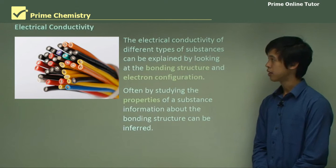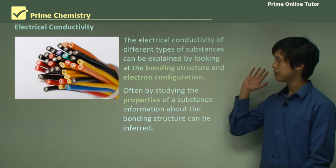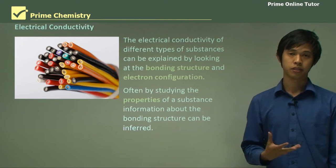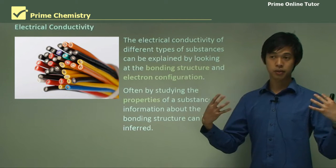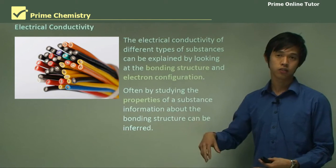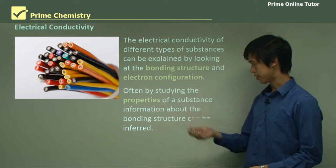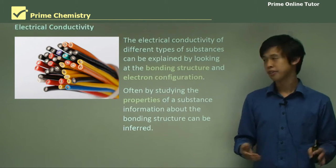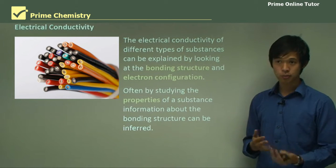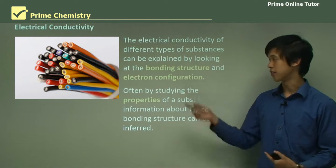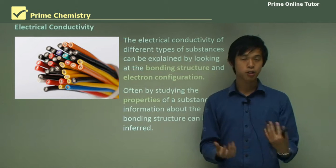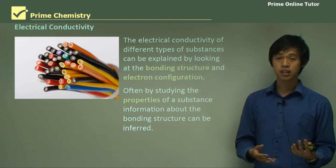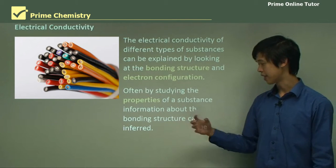So firstly, electrical conductivity. The electrical conductivity of different types of substances can be explained by looking at the bonding structure and electron configuration of those substances. By studying the properties of a substance, information about the bonding structure can be inferred. So you could go one of two ways — you could explain a property because of the bonding structure, or use electrical conductivity to learn about the bonding structure of a new, unknown material.